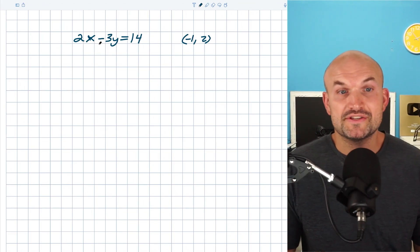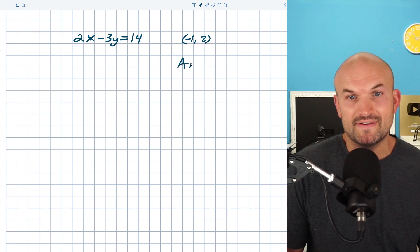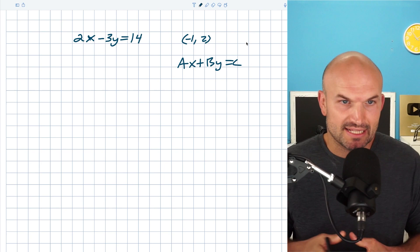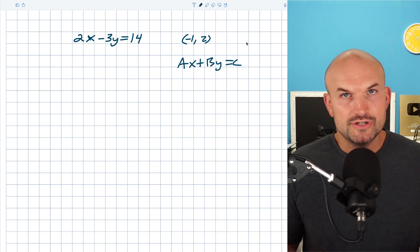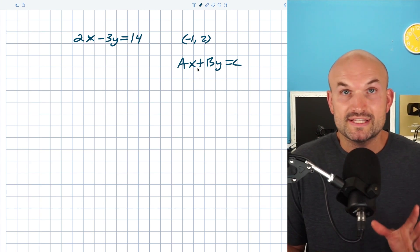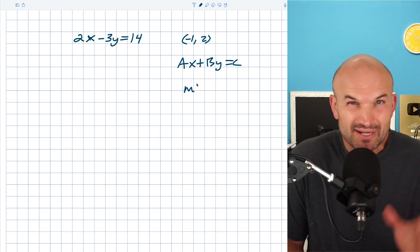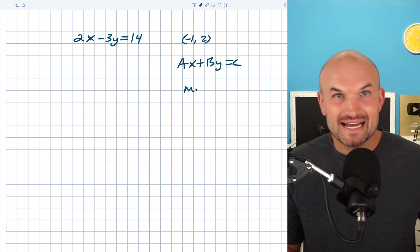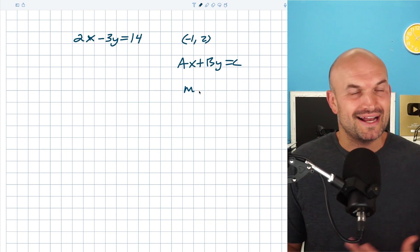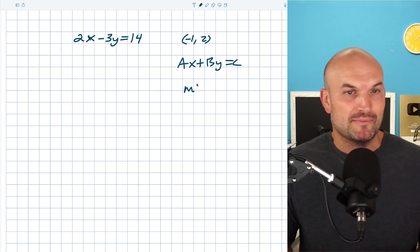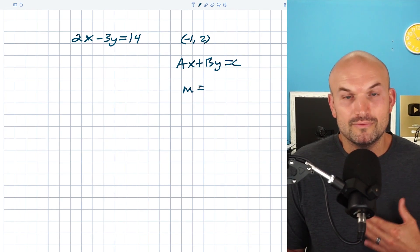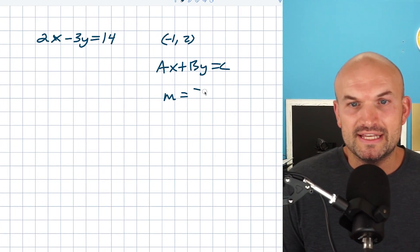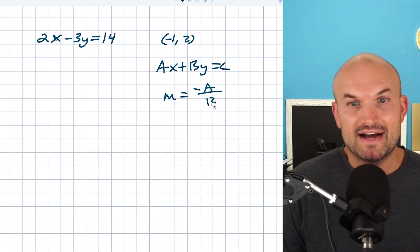In this example, we have an equation in standard form, which is ax plus by equals c. When finding something parallel to it, it's helpful to know the slope. There are two ways to do this. One option: recognize that in standard form, the slope is the opposite of a divided by b. In this case, the opposite of a would be negative two over negative three, which gives a positive two-thirds.